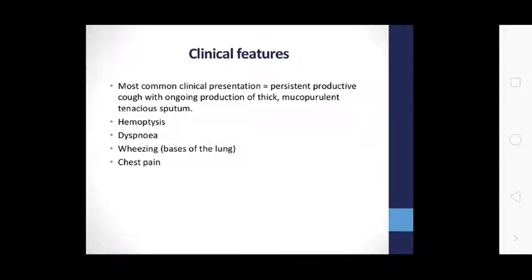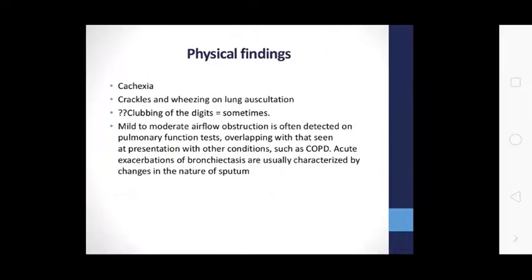The most common clinical presentation includes a chronic cough with ongoing production of thick mucopurulent sputum, tanner cases, dyspnea, wheezing, and chest pain. Physical findings include cachexia, crackles and wheezing on auscultation, and digital clubbing. Mild to moderate airflow obstruction is detected on pulmonary function tests, overlapping with conditions such as COPD — chronic obstructive pulmonary disease. Acute exacerbations of bronchiectasis are usually characterized by a change in the nature of sputum.